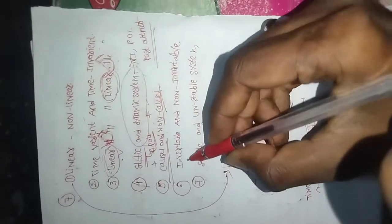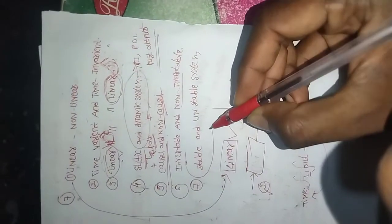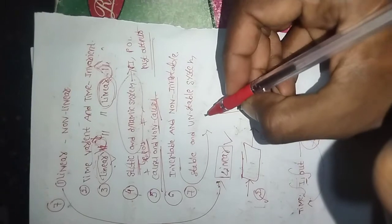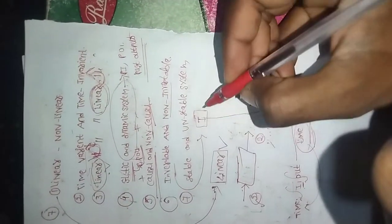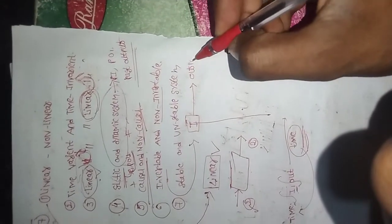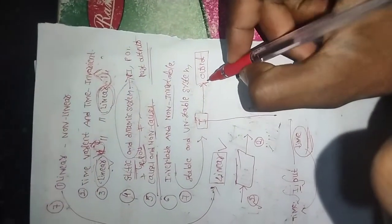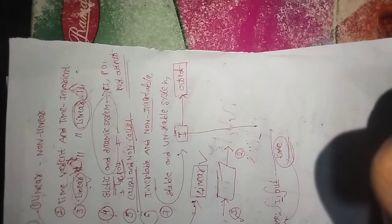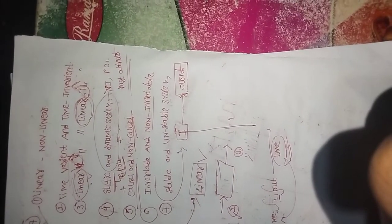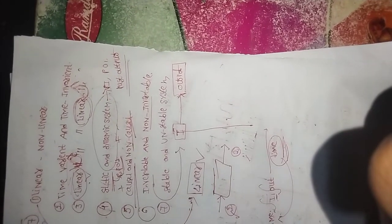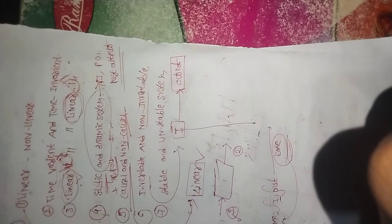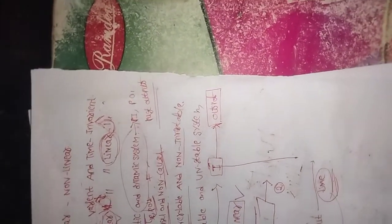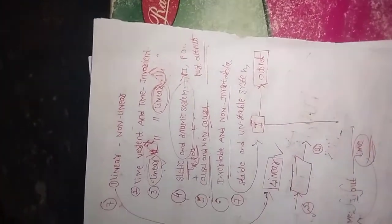For an invertible system, the input appears at the output - the system input can be recovered from the output. The system is said to be invertible if the input of the system appears at the output. For a non-invertible system, the input cannot be uniquely recovered from the output.